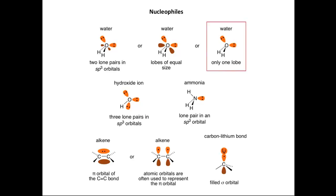We'll now look at some carbon-based nucleophiles, in particular an alkene. In an alkene, it's the pi bond which is the nucleophilic site. We can represent the pi orbital of the C-C bond using two lobes, with two dots representing the electrons in the pi bond. Alternatively, and commonly, atomic orbitals are used to represent the pi bond — two p-orbitals which combine to make up the pi orbital, with one electron in each p-orbital.